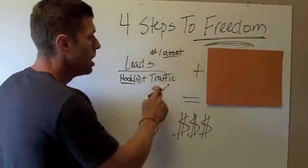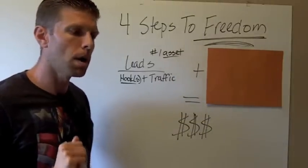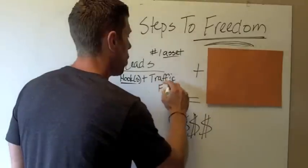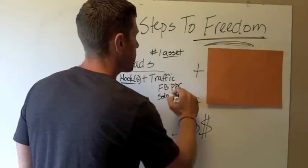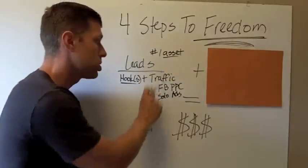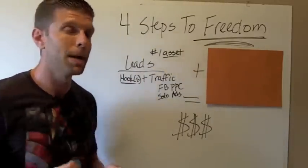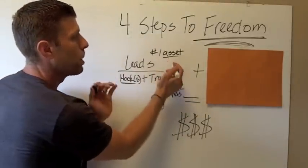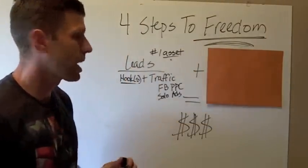Once you've got your hook and your capture trap, as we like to call it, we need to get traffic. The two best, fastest ways that we have found to get traffic online — and we've used over and over with massive success — are Facebook pay-per-click and solo ads. There are more resources on these two things below this video showing you step-by-step how to do both. So that's how we start building our email list as an asset and generate leads.